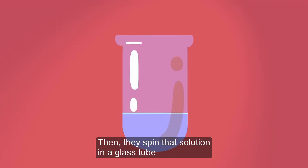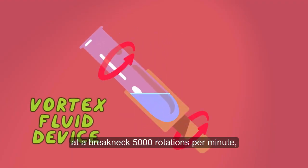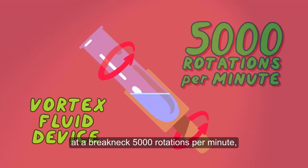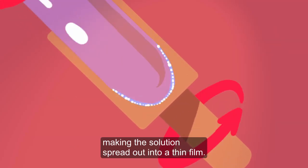Then, they spin that solution in a glass tube at a breakneck 5,000 rotations per minute, making the solution spread out into a thin film.